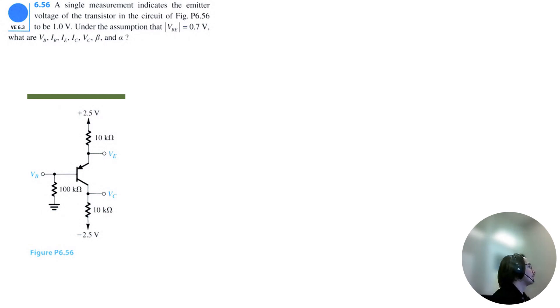So we have an NPN transistor with our emitter, base, and collector, and the problem states that the emitter voltage is equal to 1 volt. Then under the assumption that the absolute voltage drop from base to emitter is 0.7 volts, we want to find all these values.